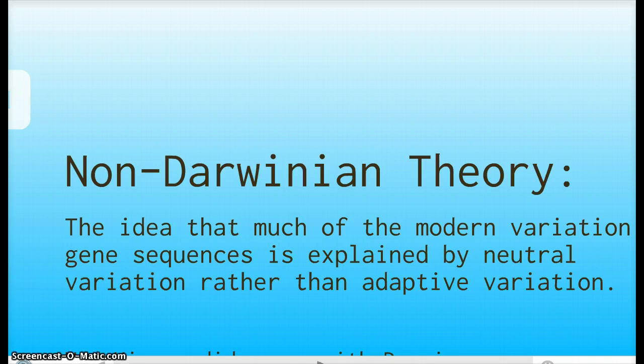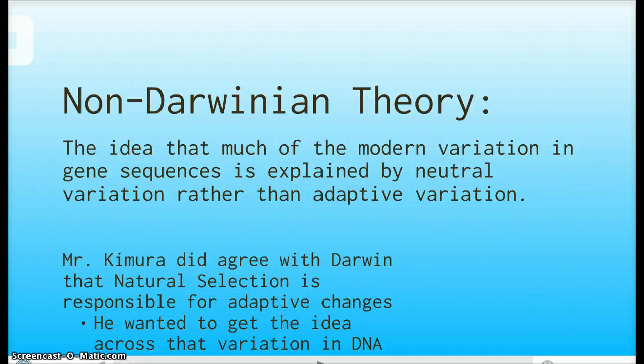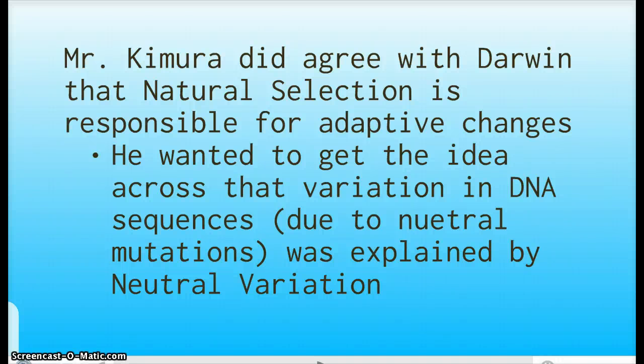So he proposed another theory, the non-Darwinian theory, which is the idea that much of modern variation in gene sequences is explained by neutral variation rather than adaptive variation. Remember what adaptive variation is? How the genes pretty much changed in order to adapt to the environment due to environmental changes.